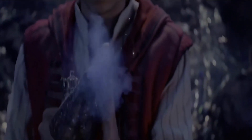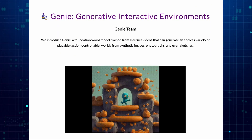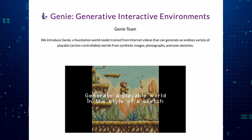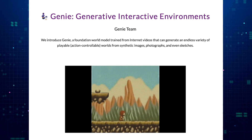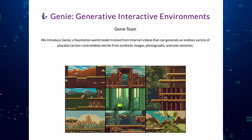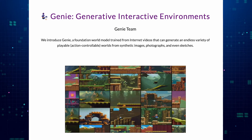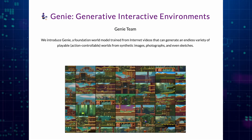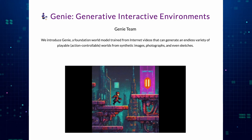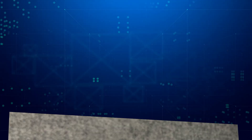So, what exactly is Genie? Imagine a magical lamp rubbed and a wish granted. Genie is a powerful AI model trained on vast amounts of internet videos, specifically those featuring side-scrolling platformer games and robotics. But here's the twist — Genie doesn't just watch these videos. It learns from them, absorbing the intricacies of movement, controls, and environment interaction. This allows Genie to do something extraordinary: it can generate entirely new, playable worlds based on images you provide.